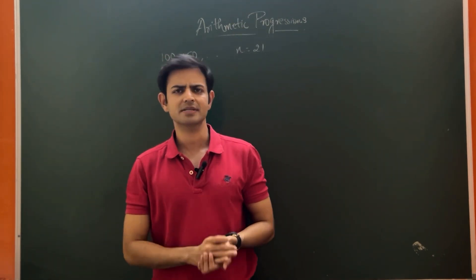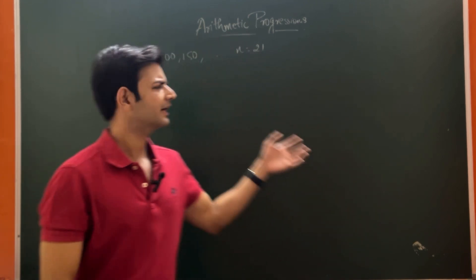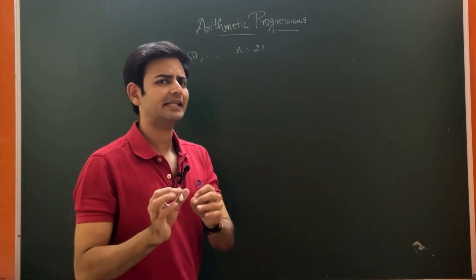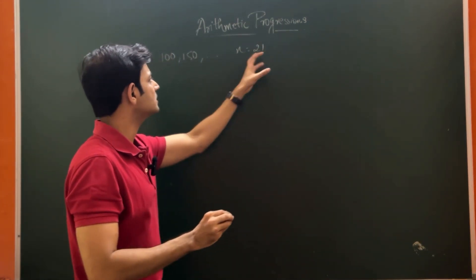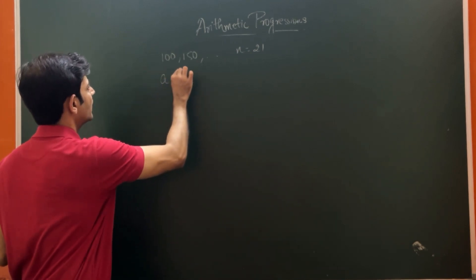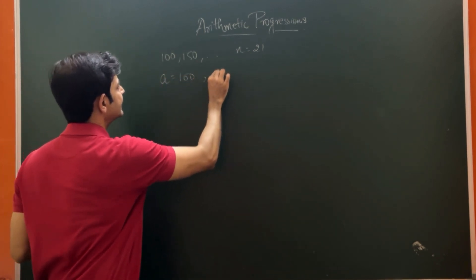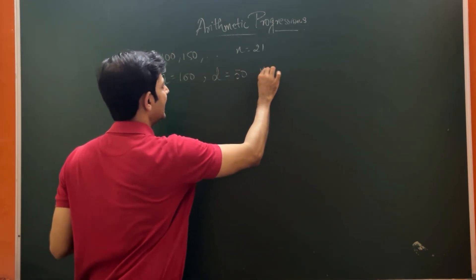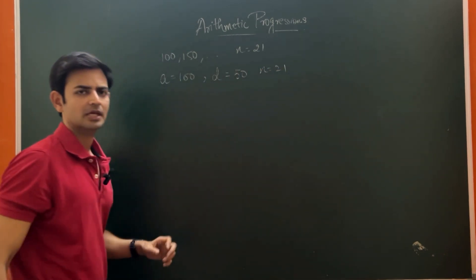Let us have a question to understand this concept better. We are given a sequence here 100, 150 and so on, and I am asked to find the sum of 21 terms of this series. In this case, A is equal to 100, D is equal to 150 minus 100 which is equal to 50, and N is equal to 21.